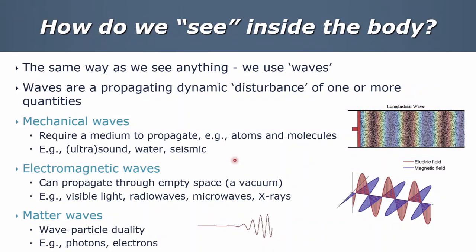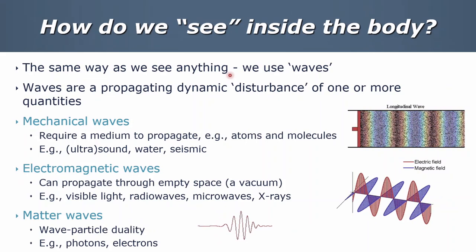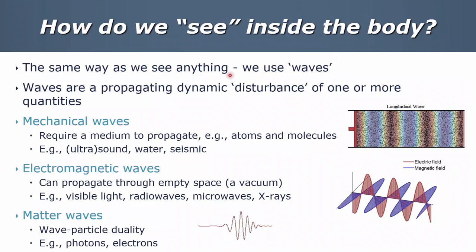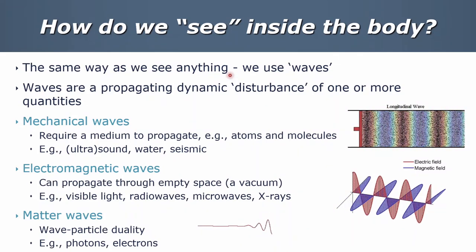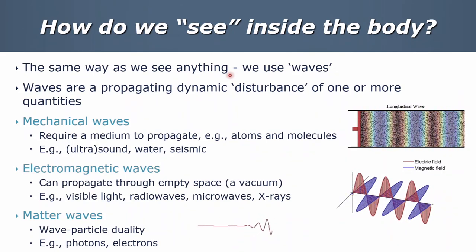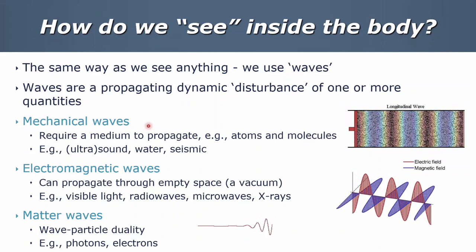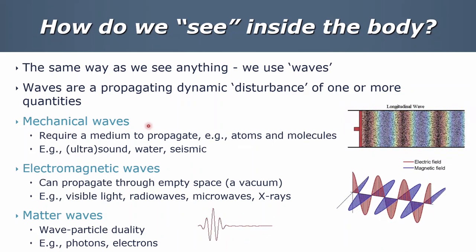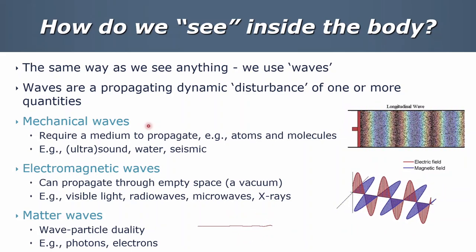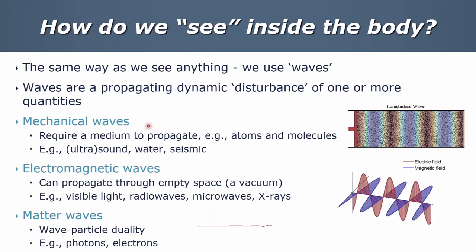So how do we see inside the body? We use the same way as we see anything — we use waves. Waves are a propagating dynamic disturbance of one or more quantities. People are probably quite familiar with mechanical waves, where we have a medium such as atoms and molecules, and we've got sound waves — and as we'll discuss in ultrasound, higher frequency waves beyond normal hearing — and seismic waves as well.